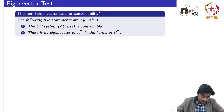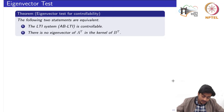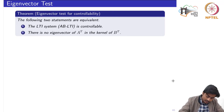After introducing the two properties of the A-invariant subspace, we will use the eigenvector test for controllability. The result states that the LTI system — that is, the pair (A, B) — is controllable if and only if there is no eigenvector of A-transpose in the kernel of B-transpose. First, let us understand what is written in the statement, and then we will go through the proof.